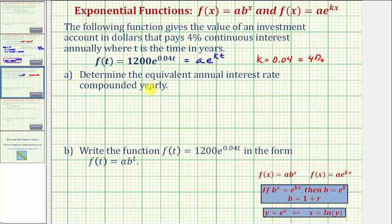For part a, we're asked to determine the equivalent annual interest rate compounded yearly. To determine the annual interest rate compounded yearly, we want the given function to be in the form f(x) = ab^x, where the base b equals one plus r. In this case, r is going to be the annual interest rate.